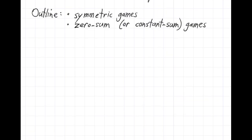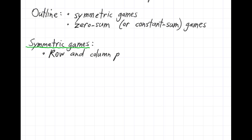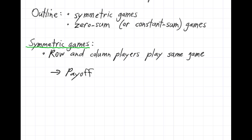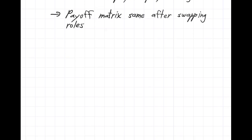Let's talk first about symmetric games. This is a term that will come up again and again, so you should get comfortable with it and add it to your glossary. The basic idea behind a symmetric game is that you have two players — a row player and a column player — and they both play the same game. Their roles are interchangeable, and in particular the payoff matrix is the same. Let's look at an example to see how that works.